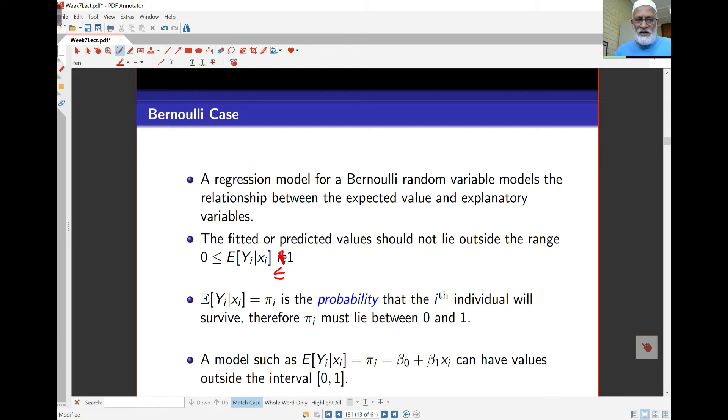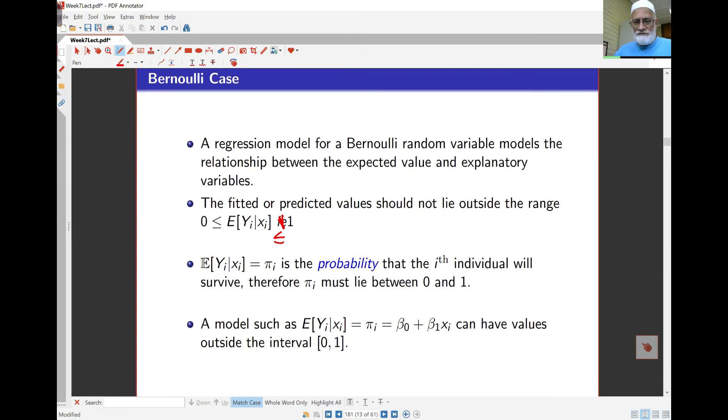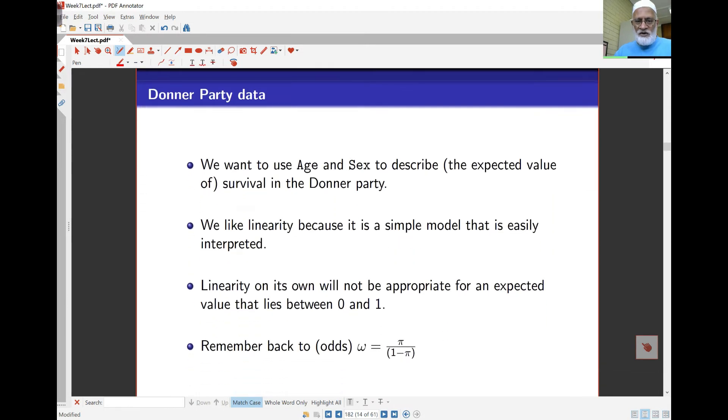For the i-th individual, the probability won't be the same for every individual—it depends on the individual and also on the covariates. For the i-th individual, the probability of survival, πi, must lie between 0 and 1. Linear regression doesn't guarantee us that.